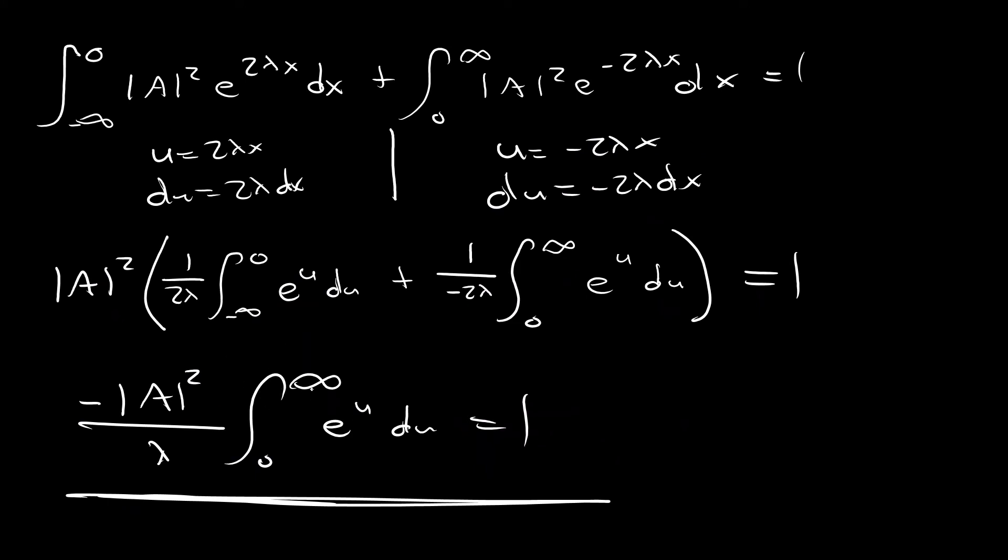Really, we didn't have to do anything all that crazy or all that insane. So, let's just do this aside. And when we evaluate this, we get that the absolute value of A squared divided by lambda is equal to 1. Then, we can just do a little bit of algebra to see that A is equal to the square root of lambda.